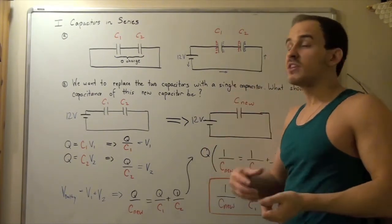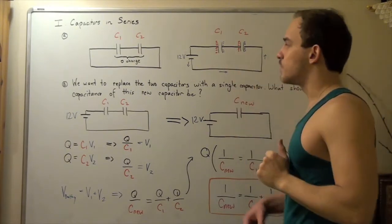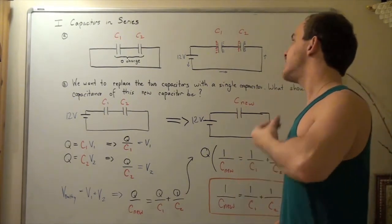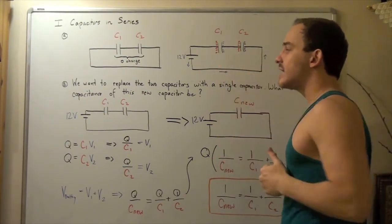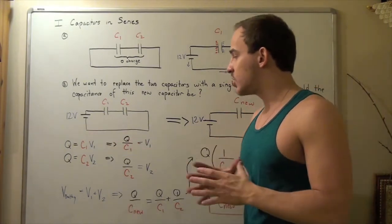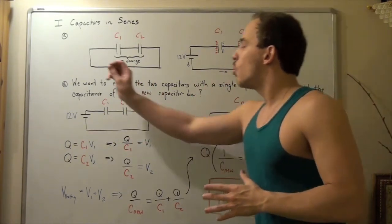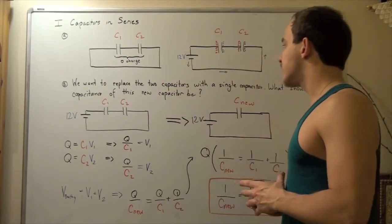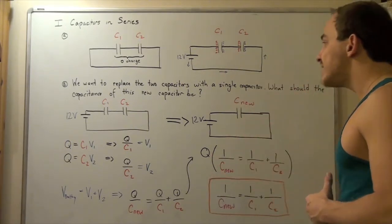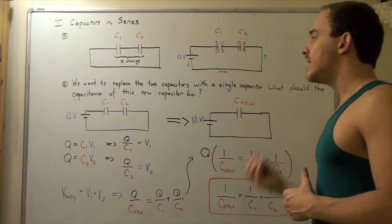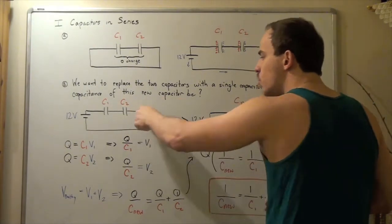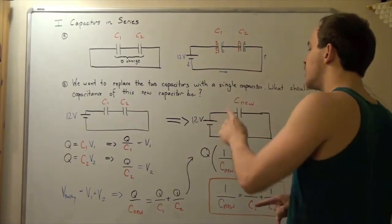Now let's go back to finding the charge on each capacitor. We just saw that the charge on C1 must have exactly the same magnitude as the charge on C2. With that in mind, we want to replace the two capacitors with a single equivalent capacitor. We want to ask: what should the capacitance of this new capacitor — C_nu — be? In other words, we want to go from the circuit with C1 and C2 to one with a single capacitor C_nu.